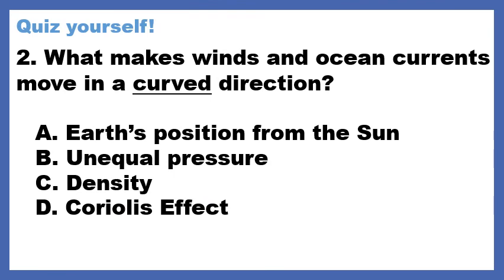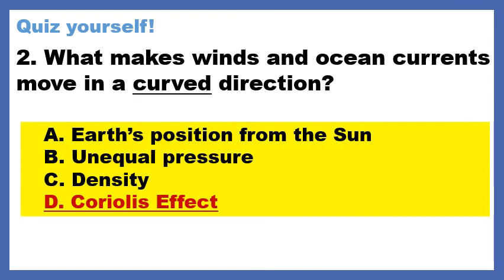Last question, number two: What makes winds and ocean currents move in a curved direction? A. Earth's position from the sun. B. Unequal pressure. C. Density. Or D. Coriolis effect. Feel free to pause the video if you need more time. Density is eliminated because we learned about winds and ocean currents before we learned about density. Unequal pressure is what causes winds to flow — always high to low — but it doesn't make them curved. So the correct answer is the Coriolis effect, which has to do with how the Earth spins and is tilted. Winds and ocean currents don't go in a straight line — they curve a little bit.